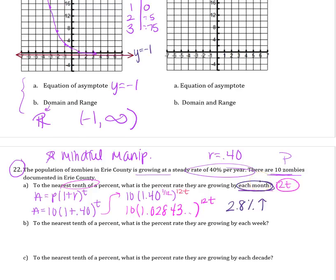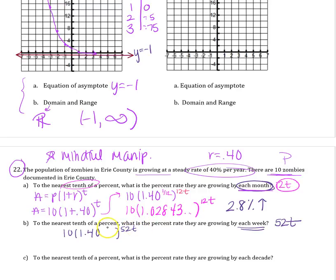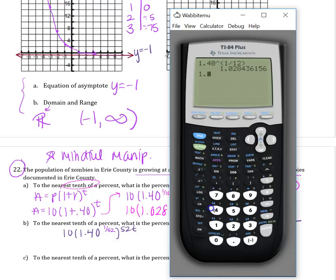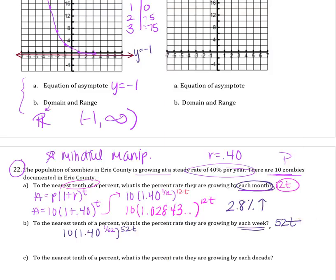For the weekly rate: there are 52 weeks per year. Raise 1.4 to the 1 over 52, getting approximately 1.0064. With 52t on the outside, the growth rate is 0.6% increase per week.